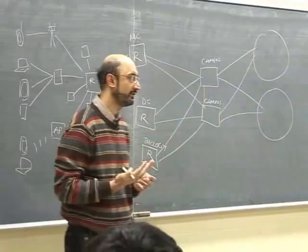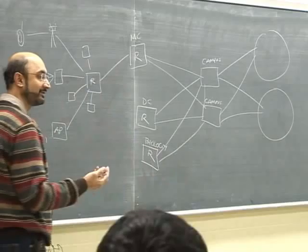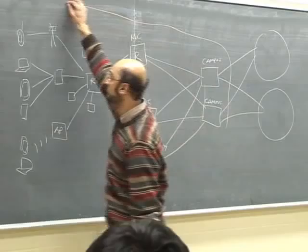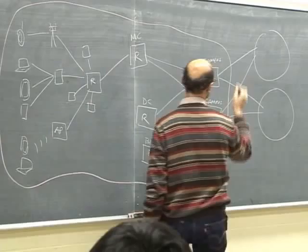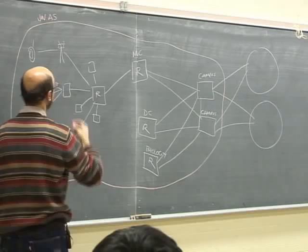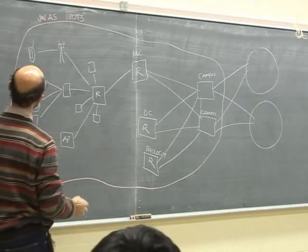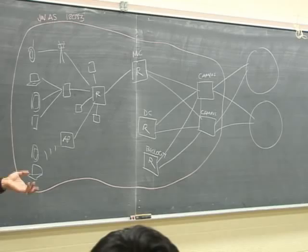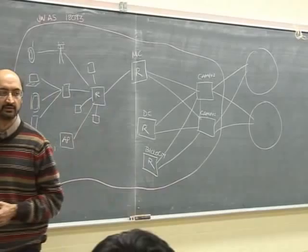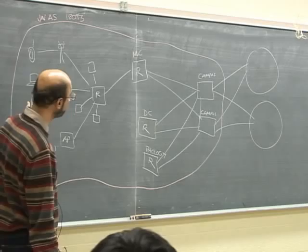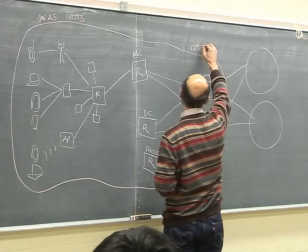As you saw in the first assignment, an AS is an autonomous system — basically another term for a network. What I'm drawing here is the Waterloo Autonomous System. This is the UW-AS, whatever its number is. It has roughly about 50,000 endpoints — about 25,000 to 30,000 students plus employees, each with one or two endpoints. Interestingly, they all share the same prefix: 129.97.0.0/16.